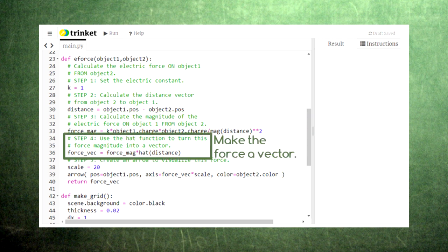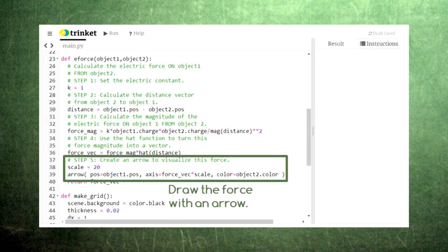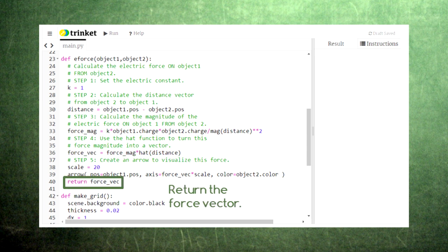Finally, we turn this magnitude into a vector by multiplying the magnitude by the distance unit vector. VPython uses the name hat for this vector since mathematicians and scientists write unit vectors with a hat over the letter. After calculating this force vector, we create an arrow to represent the electric force. At the end of this function, we return the force vector so that we can use it later.